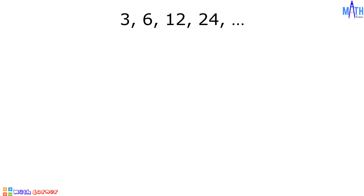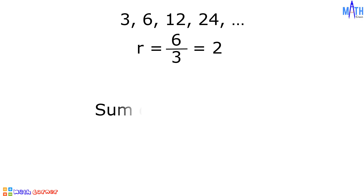Another example: we have 3, 6, 12, 24, and so on. Let us find the sum if it exists. Let us divide any term by its preceding term to determine the common ratio: 6 divided by 3 is equal to 2. The absolute value of 2 is not less than 1. Therefore, the sum does not exist.